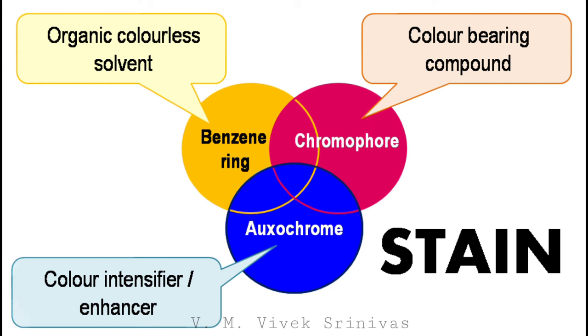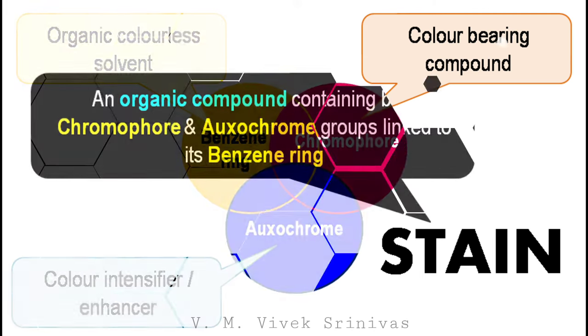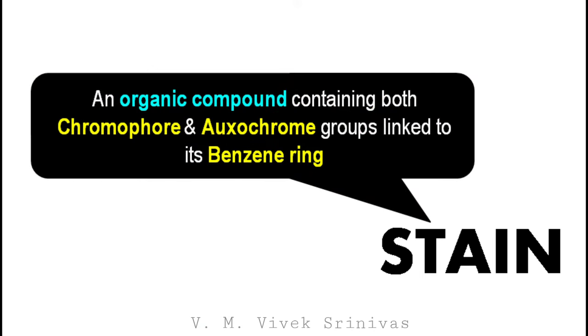So, the stain is chemically defined as an organic compound containing both the chromophore and the oxochrome groups linked to its benzene ring.